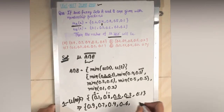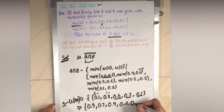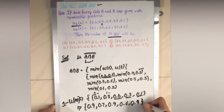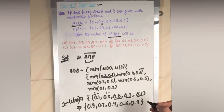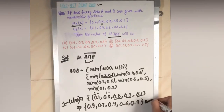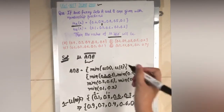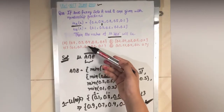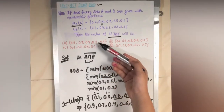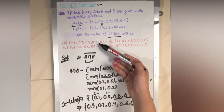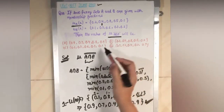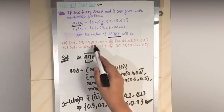Continuing the complementation: 1 minus 0.6 gives 0.4; 1 minus 0.3 gives 0.6 (wait — that would be for 0.4); and 1 minus 0.1 gives 0.9. So the final membership values for A intersection B complement are: 0.9, 0.7, 0.4, 0.6, and 0.9.